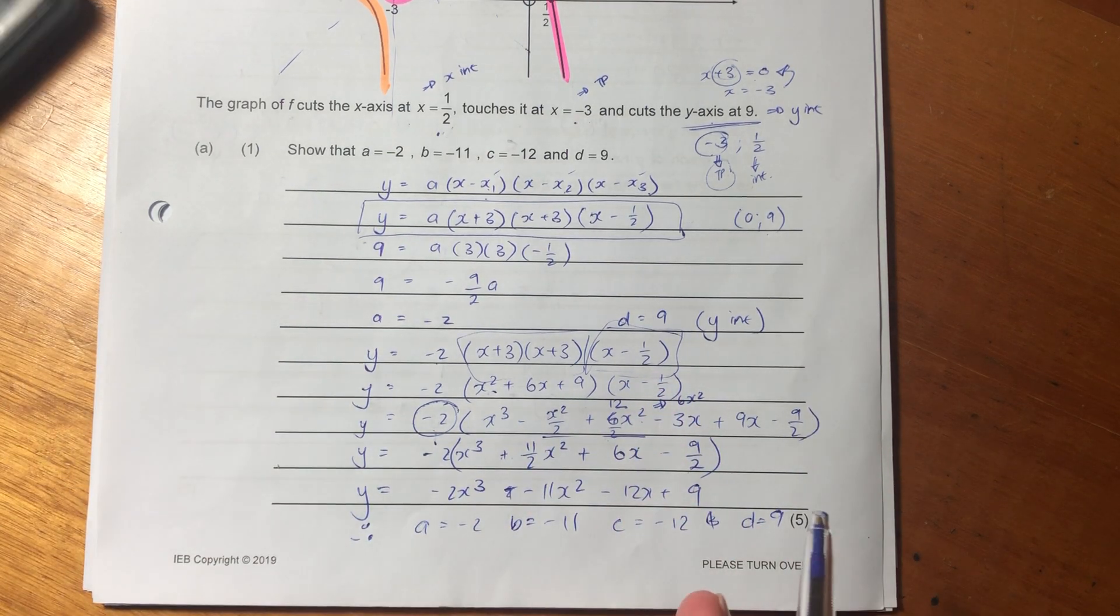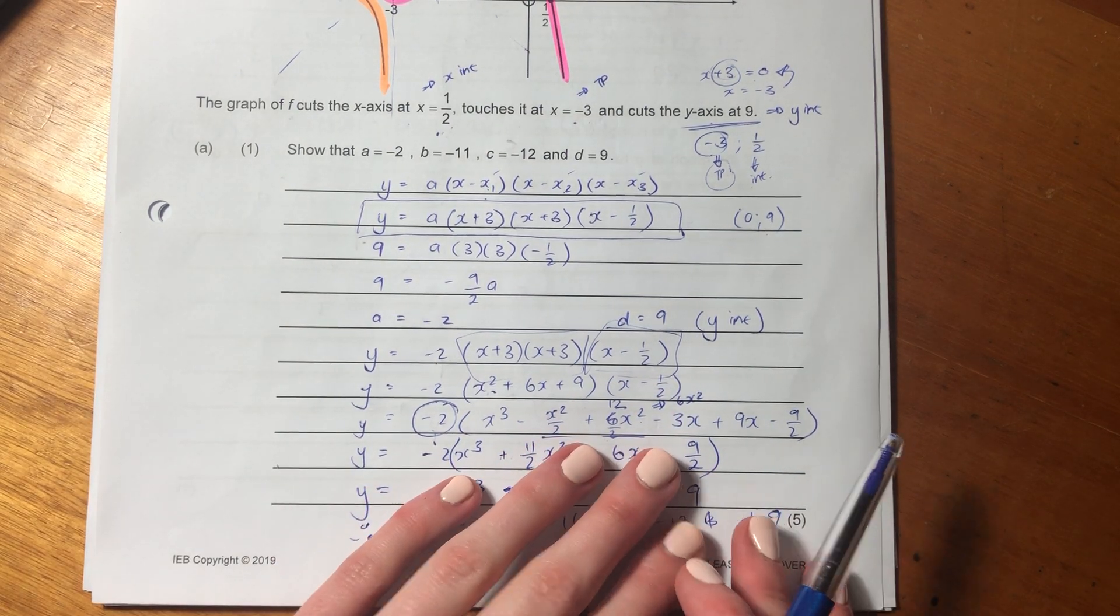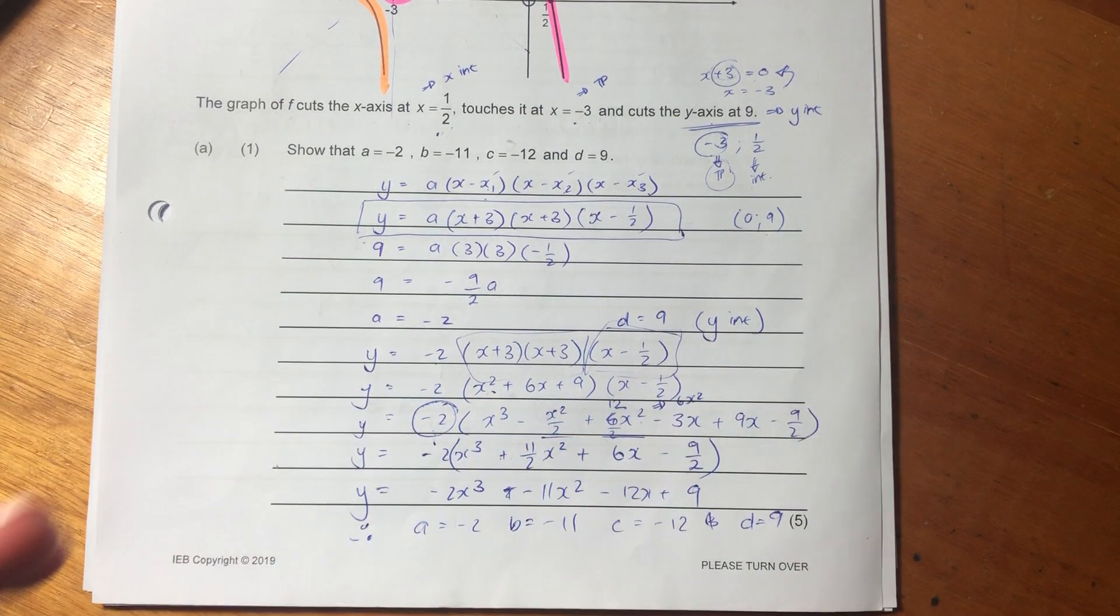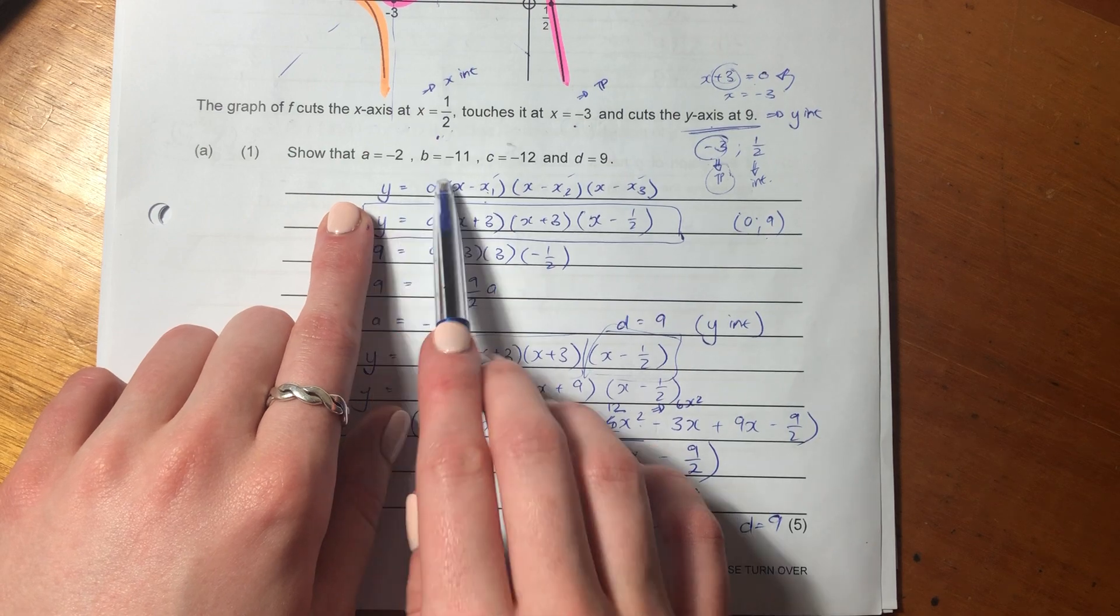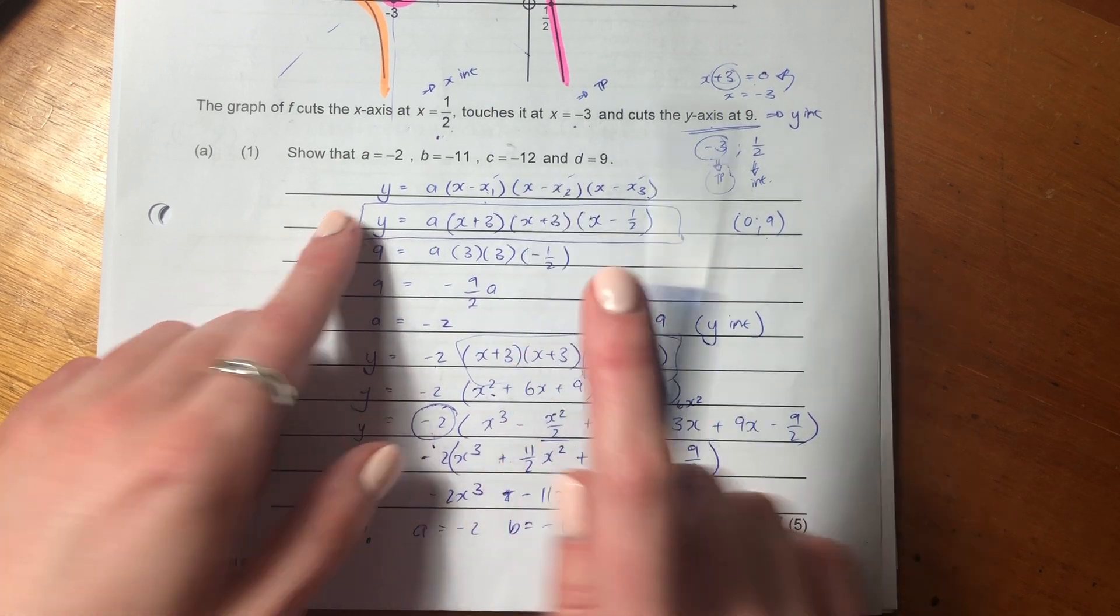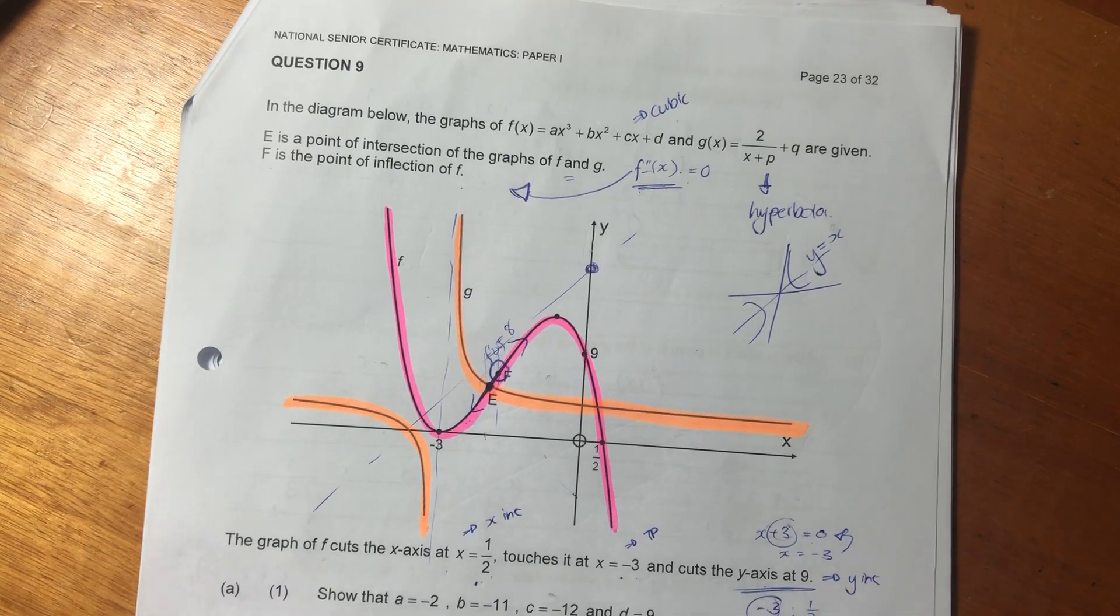A = -2, B = -11, C = -12, D = 9 which we knew already but we've just confirmed again. So that is how you go about this. It's five marks which is quite a lot, but it's not too difficult if you know this form of a cubic graph. So that's the big learning for this question.